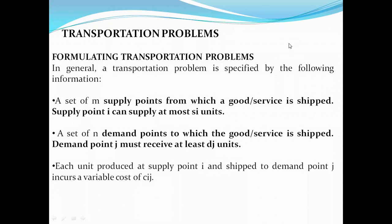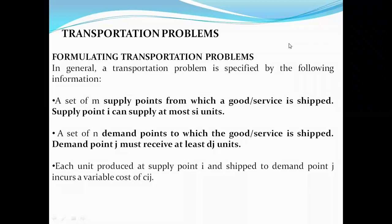In general, a set of m supply points from which goods and services are supplied — supply point i can supply at most s_i units. These are warehouse stations where finished goods are stored. Next, a set of n demand points to which goods and services are shipped — demand point j must receive at least d_j units. The similar units stored in the warehouses at the m points need to be shifted to the n demand points.